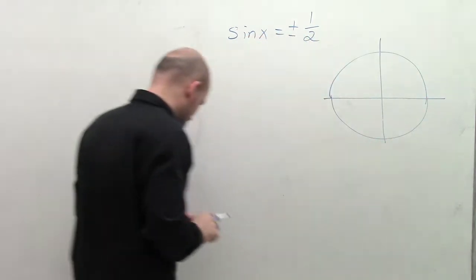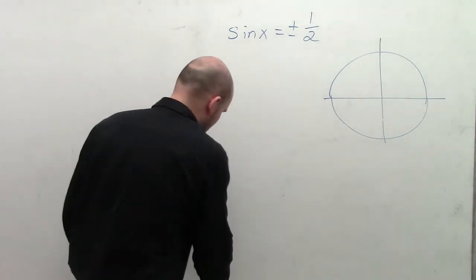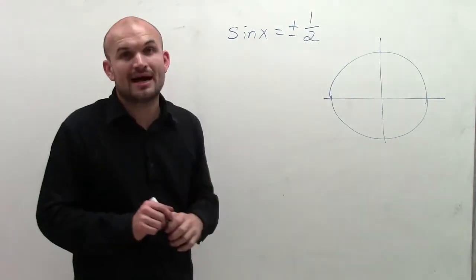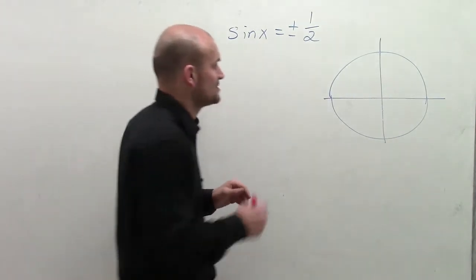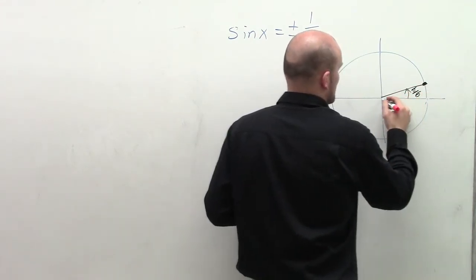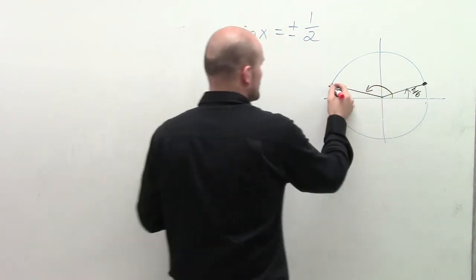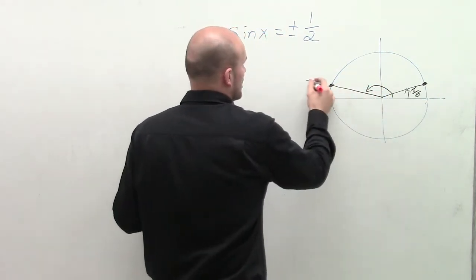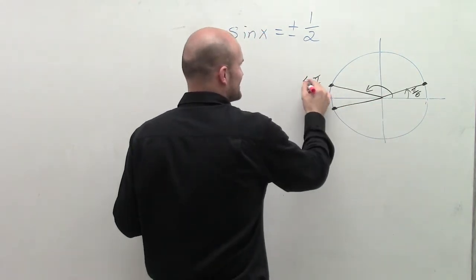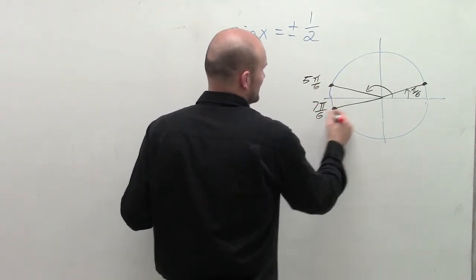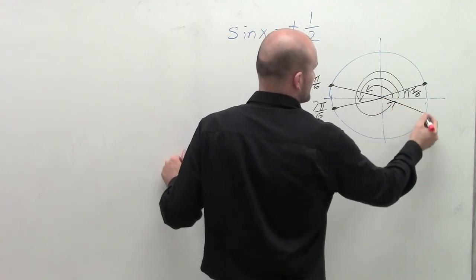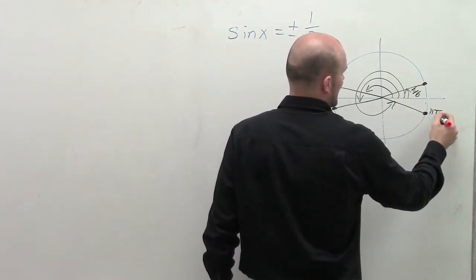So I create the unit circle and look at where sine equals plus or minus 1/2. That occurs at a couple of angles. The first angle is π/6. Then we have an angle at negative π/6 — actually, that one is not negative π/6, that's going to be at 5π/6. Then this angle is at 7π/6. And finally, we have our last angle at 11π/6.